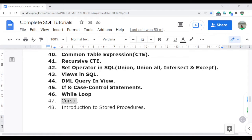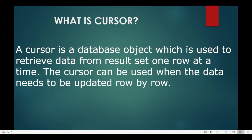I will discuss in detail what exactly a cursor is. This is very important from an interview point of view. One of the main important questions is: what is the lifecycle of the cursor? Basically, a cursor is a database object which is used to retrieve data from a result set one row at a time. The cursor can be used when data needs to be updated row by row — when you have a requirement to process data row by row, you can use the cursor.